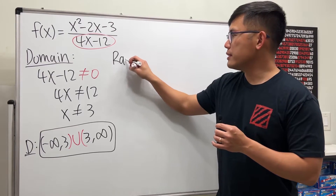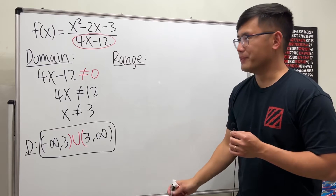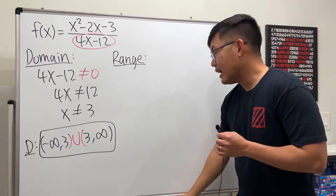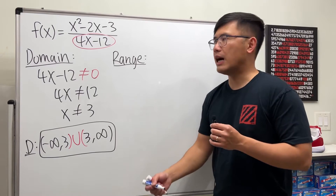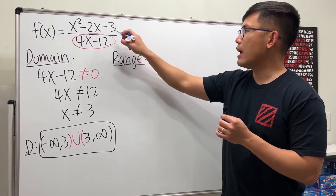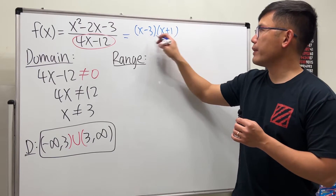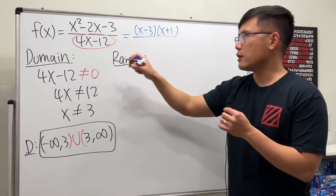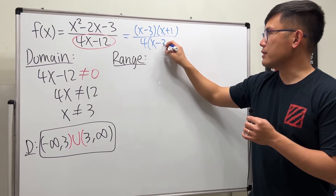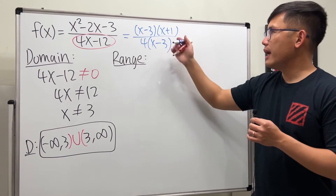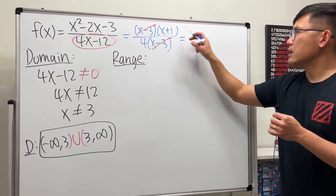Now for the range — this is usually harder, and it's also tricky here. Notice that on the top and bottom we can factor and cancel things out. On the top we factor to get (x minus 3)(x plus 1). On the bottom we factor out 4 to get 4 times (x minus 3). The (x minus 3) terms cancel.